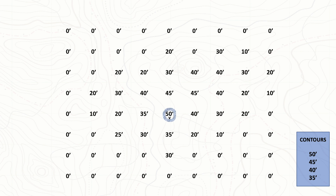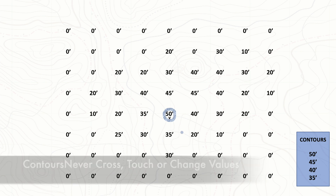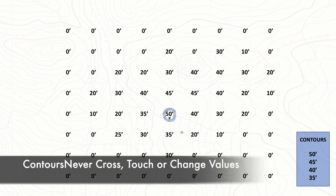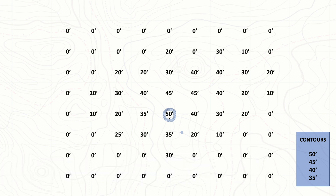Remember: contour lines never cross, they never touch, they cannot go up or down in elevation — they must always remain at the same elevation point. Now the problem is that these are random elevation points, so we may not have enough to connect the dots. We're going to have to add points where they appropriately would be. We've completed 50, so let's mark that off our list.